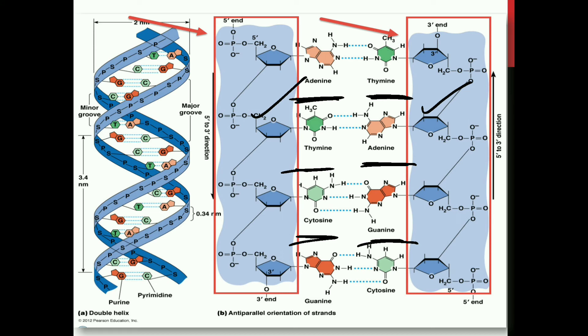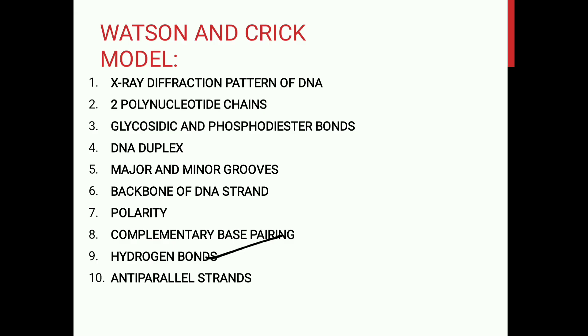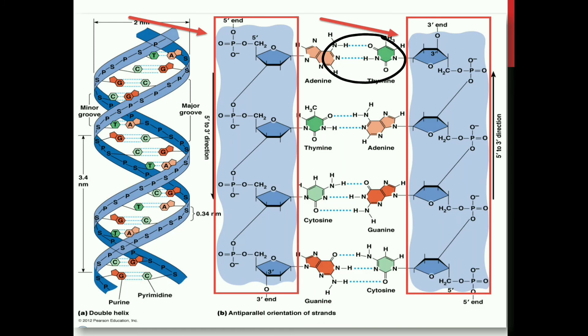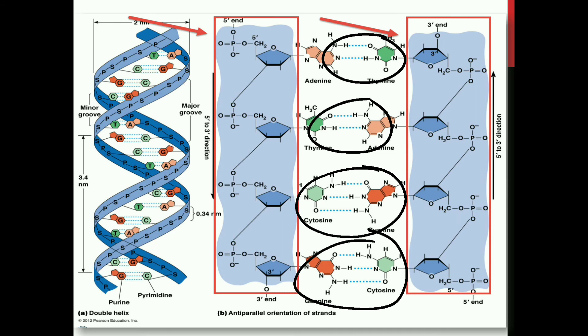The next point is the hydrogen bonds। Adenine और thymine are always bonded by two hydrogen bonds, और cytosine और guanine are always bonded via three hydrogen bonds। Hydrogen bonds दोनों strands को आपस में link करती हैं। Whenever there is bonding between guanine and cytosine, there are always three hydrogen bonds formed।